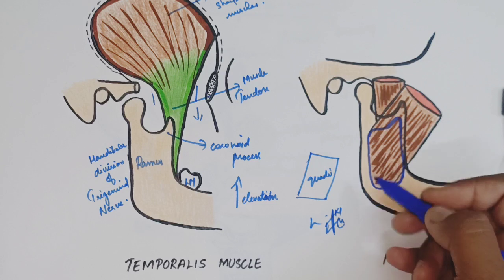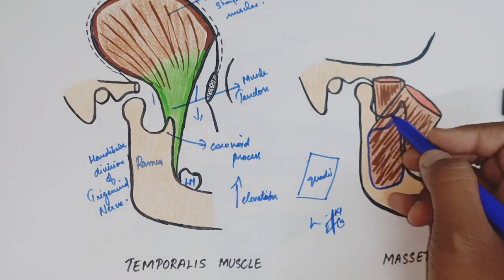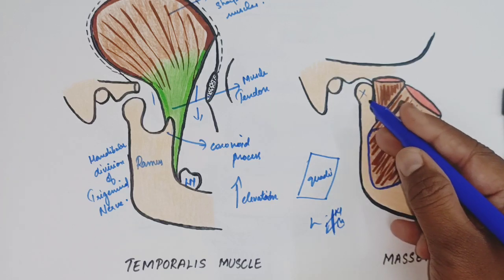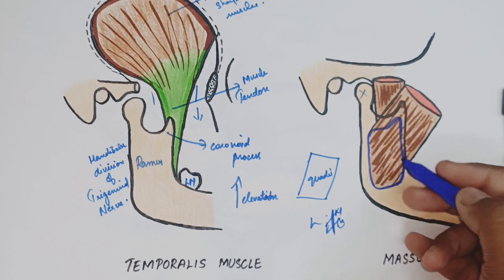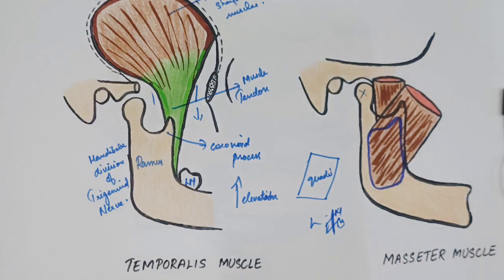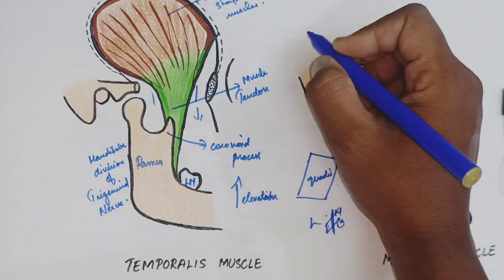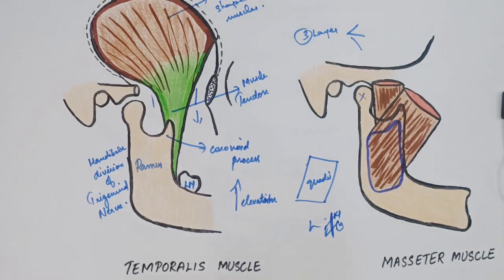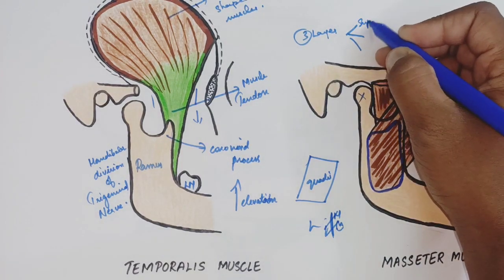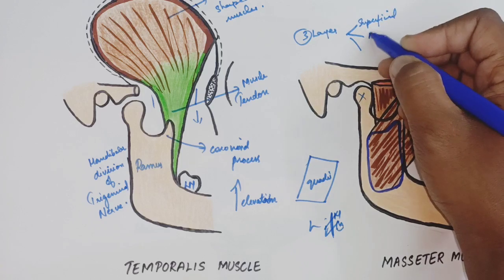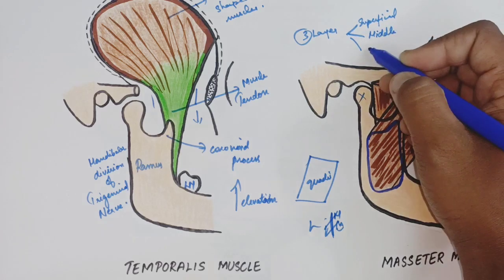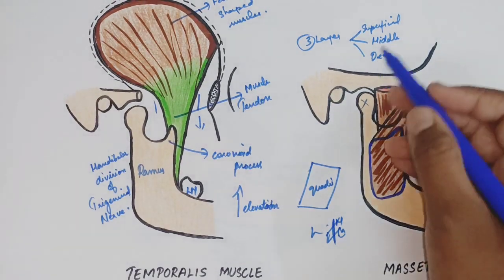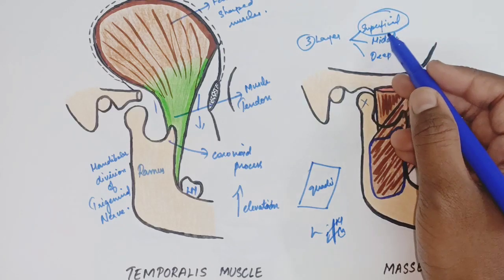The masseter covers only the coronoid process; the condylar part is not covered. The masseter muscle consists of three layers: the first is the superficial layer, the second is the middle layer, and the third is the deep layer. The superficial layer is the largest of all three layers of the masseter muscle.